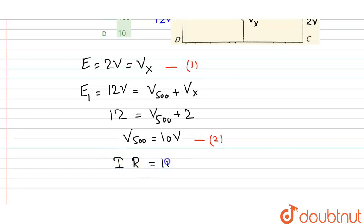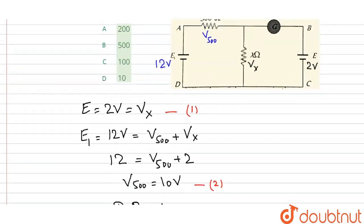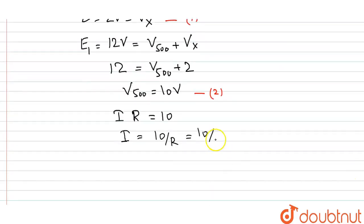And here I equals 10 divided by R. And R is what? Here the value of R is 500 ohms.